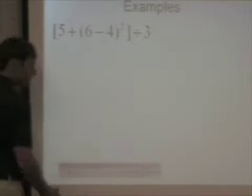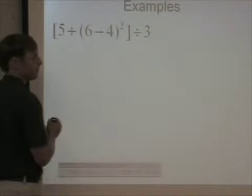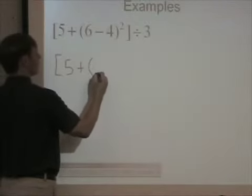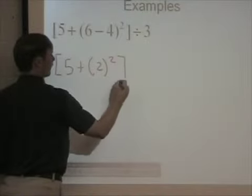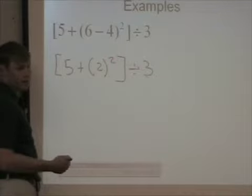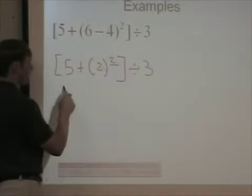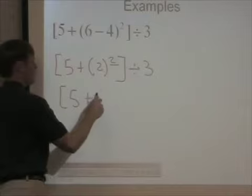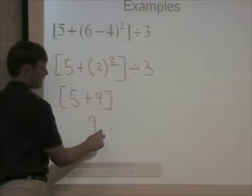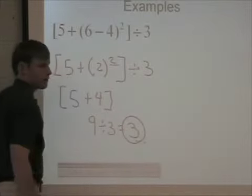On this problem, it's a little different. We have parentheses, so we do it first: six minus four is two. Two squared — and then we're going to divide our answer by three. We did our parentheses. Are there any exponents? Yes — this two right here is an exponent. What's two squared? Four. So I've got five plus four. What's five plus four? Nine. And then my last step is to divide by three, which is three. So your whole answer is three.